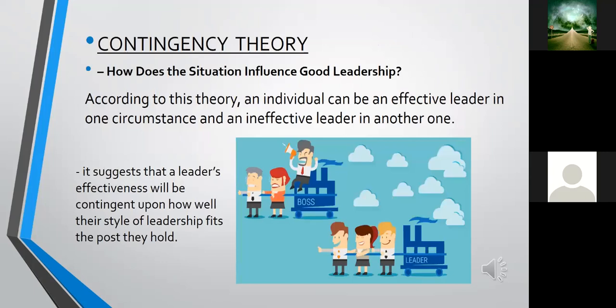The contingency theory of leadership is concerned with how the situation influences good leadership. According to this theory, an individual can be an effective leader in one circumstance and an ineffective leader in another. It suggests that a leader's effectiveness will be contingent upon how well their style of leadership fits the position they hold. For instance: when you need to make quick decisions, which style is best? When you need the full support of your team, is there a more effective way to lead? Should the leader be more people-oriented or task-oriented?